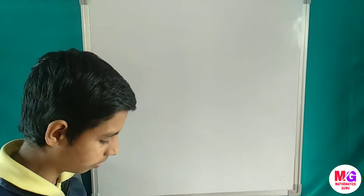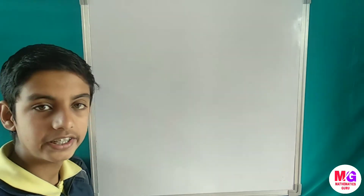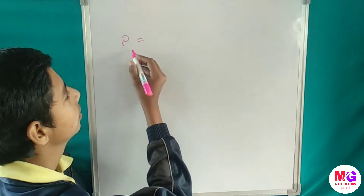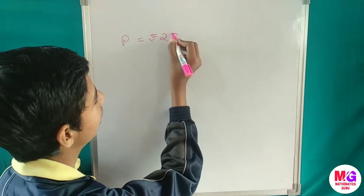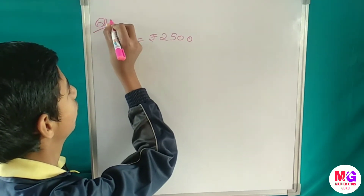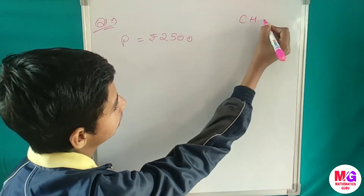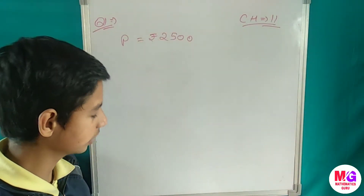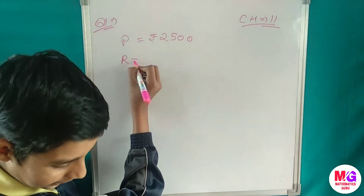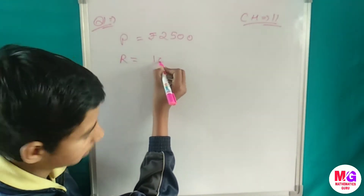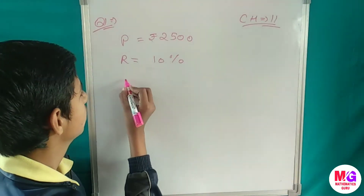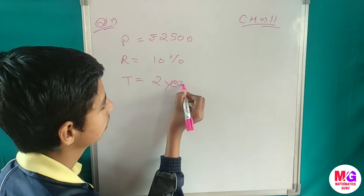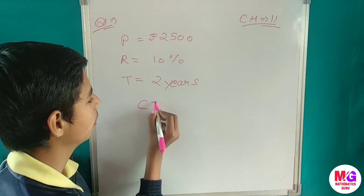Now let us quickly look at the question. We have to find the amount and the compound interest. For question number one of chapter 11A: the principal is rupees 2500, the rate is 10% per annum, and the time is 2 years.